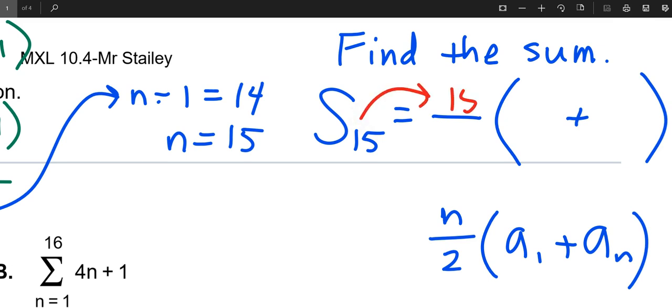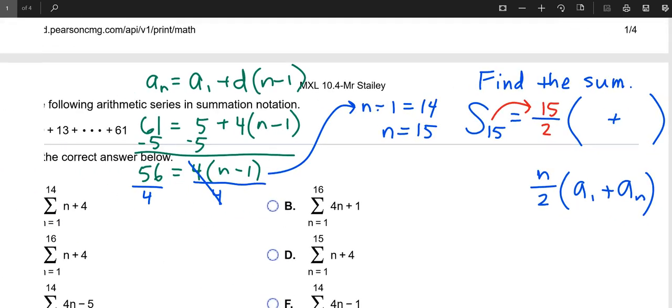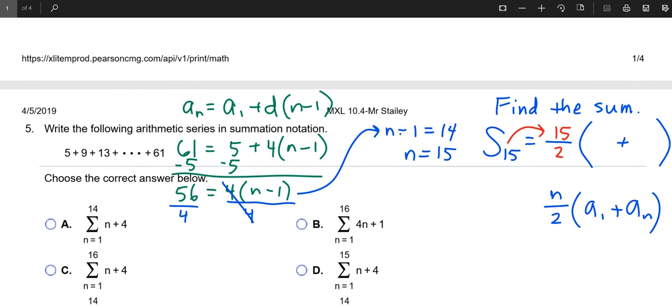15. So all you're doing is copying that number there. Okay. And then what's the first term? 5 plus 61. 5 plus 61. Okay. Go with the calculator. 495. Yes. 495 is correct.